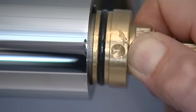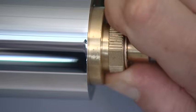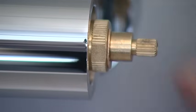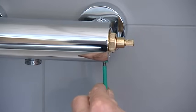Insert the cartridge into the valve housing with the grub screw tapping lining up with the hole on the underside of the body. Insert the grub screw and tighten using the hex key until it is secure.